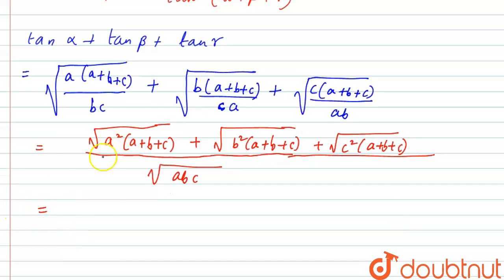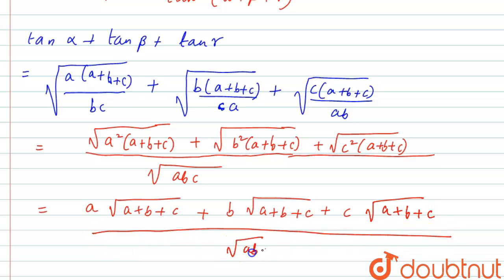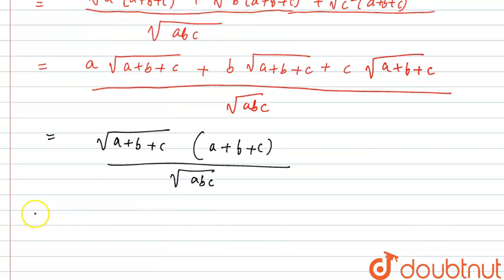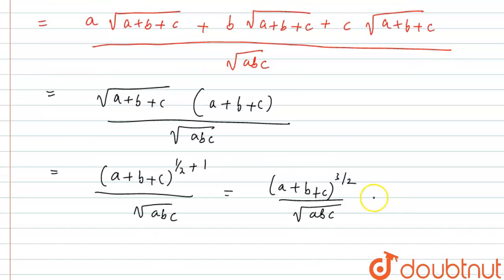This simplifies to A·√(A+B+C) + B·√(A+B+C) + C·√(A+B+C), all divided by √(ABC). Taking √(A+B+C) as common, we get √(A+B+C)·(A+B+C) / √(ABC), which equals (A+B+C)^(3/2) / √(ABC). We take this as equation 1.